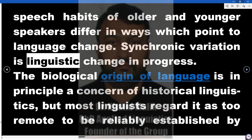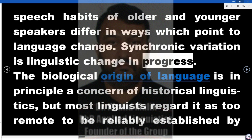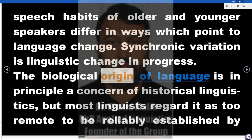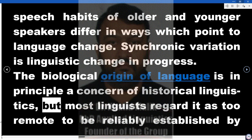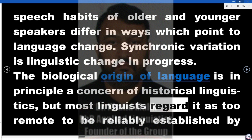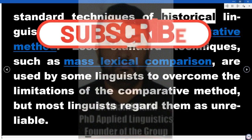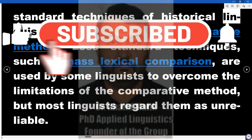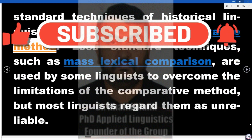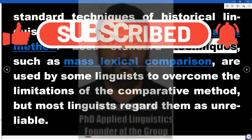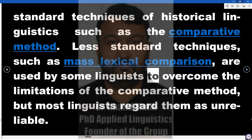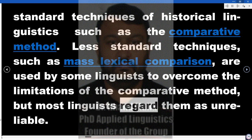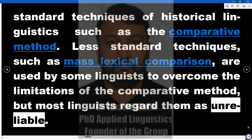Synchronic variation is linguistic change in progress. The biological origin of language is in principle a concern of historical linguistics, but most linguists regard it as too remote to be reliably established by standard techniques such as the comparative method. Less standard techniques, such as mass lexical comparison, are used by some linguists to overcome the limitations of the comparative method, but most linguists regard them as unreliable.